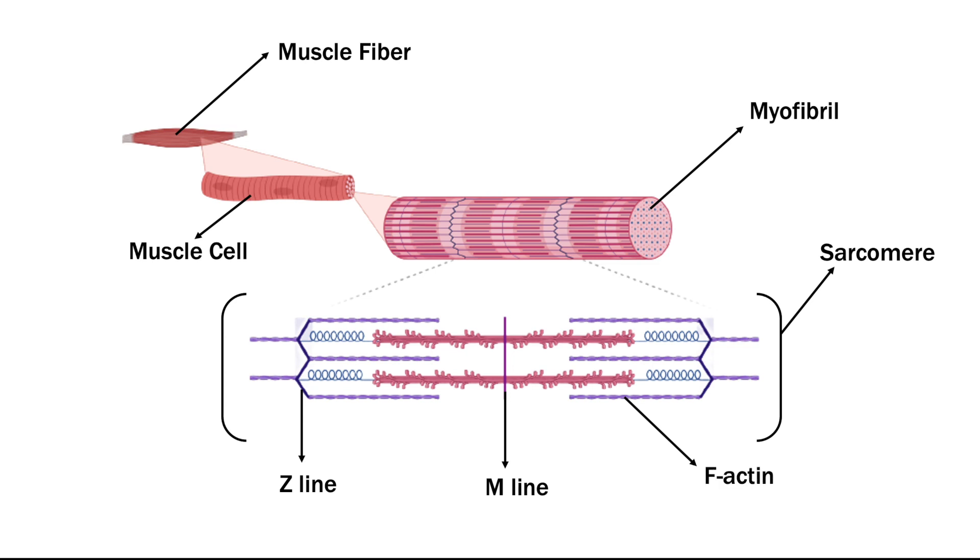The purple fibers are known as F-actin. The pink fibers in the middle is known as myosin, which converts ATP to mechanical energy, generating a force causing movement. Myosin and F-actin work together to cause muscle contraction.